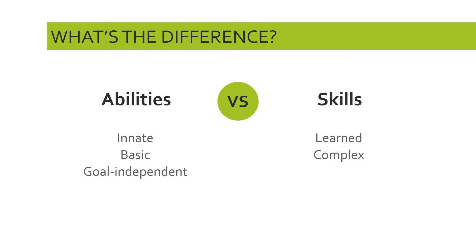Next, abilities are goal independent — that means an ability does not necessarily have a purpose; there is no inbuilt purpose to that particular ability. A skill, on the other hand, is learned for a reason. We say that a skill is goal oriented: there was something in mind that caused you to learn that skill so that you could achieve a particular outcome. You have abilities whether or not you use them, but skills are learned for a purpose.